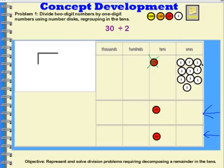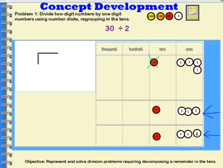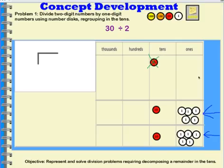Now I can take my ten ones and I can distribute those down here into my groups. So I can put one in this group, and one in this group, and so on. Keep putting one in each until I no longer have any ones in here. So now I have divided thirty into two groups, and I have in each group one ten and five ones. One ten and five ones is fifteen.